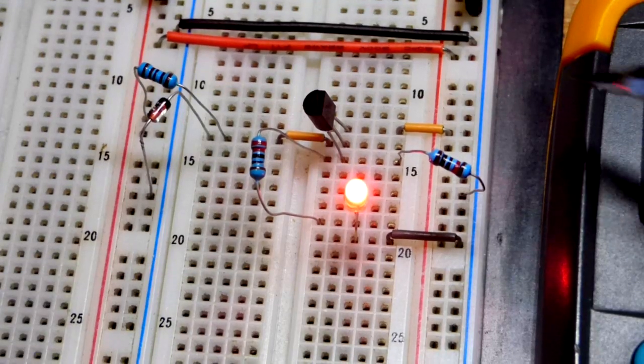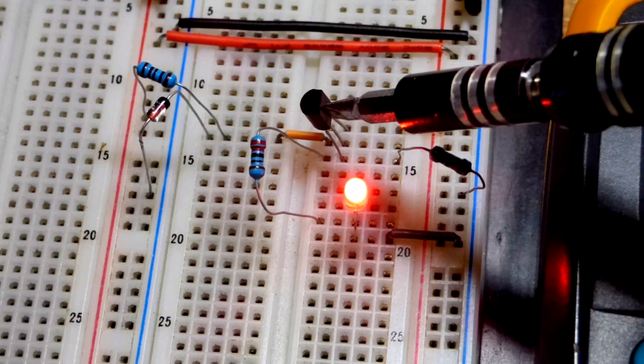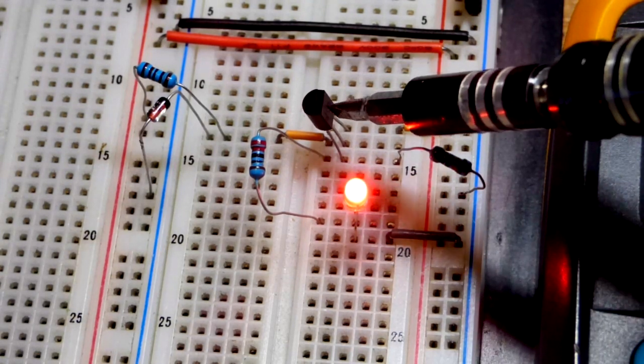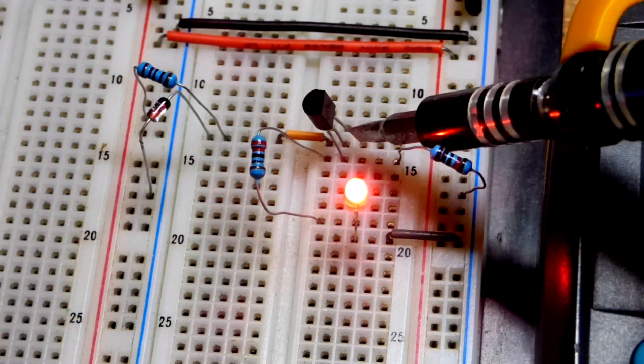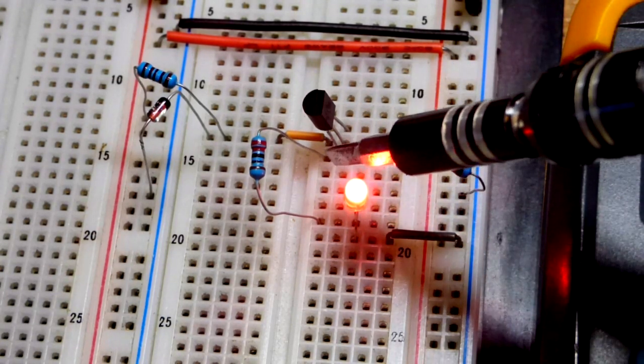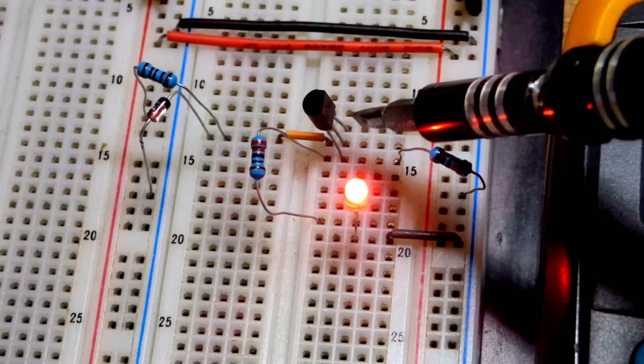And here we are on the breadboard. So the transistor here, 2N3904. If it starts with 2N, the flat side's to the right, then the top pin should be the collector, middle pin the base, and the bottom pin the emitter. All of my 2N bipolar junction transistors are like that.